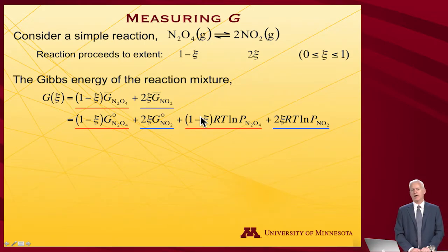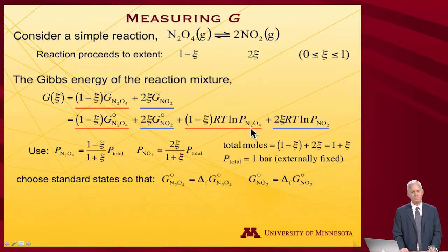The Gibbs energy of the reaction mixture is going to be equal to the free energy of how much N2O4 I have left, plus 2 times the free energy of how much NO2 I've generated, which is 2ξ. Now if I take these free energies and I express them as being standard state quantities, plus RT log pressures, where hidden in there, remember, is the standard state pressure dividing this, but it's got a quantity value of 1.